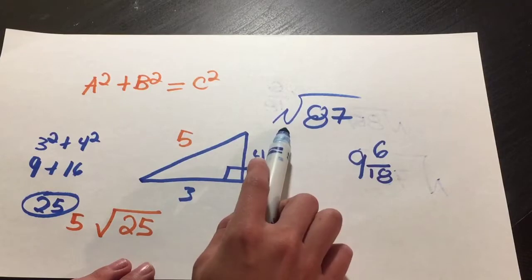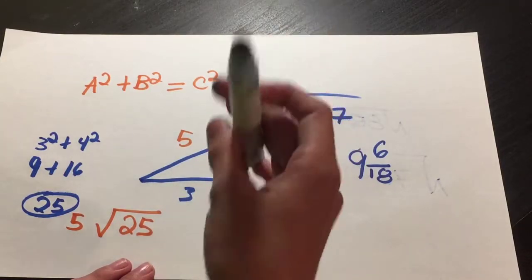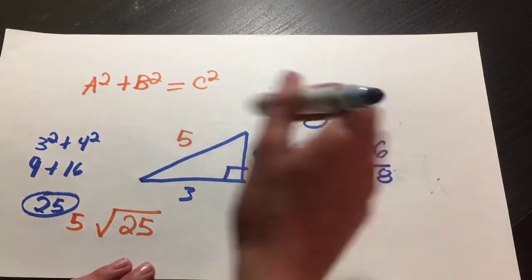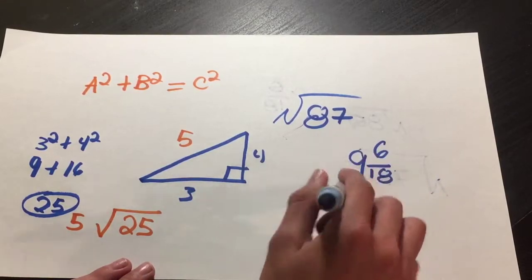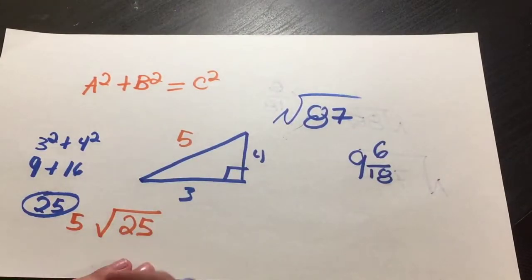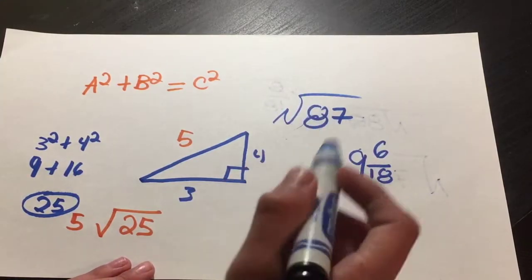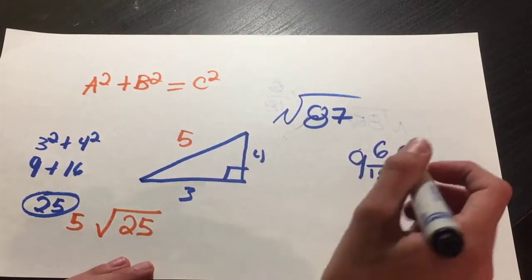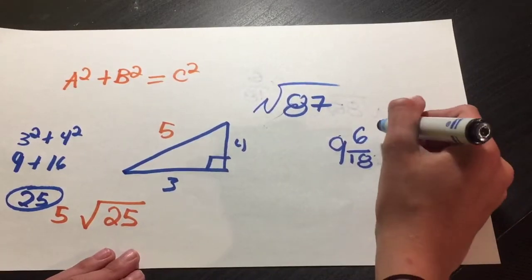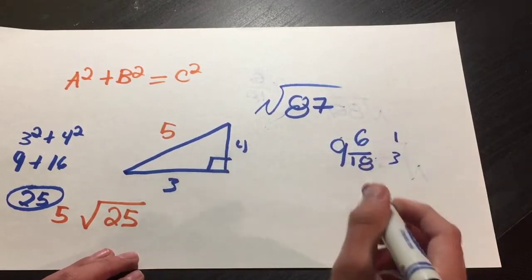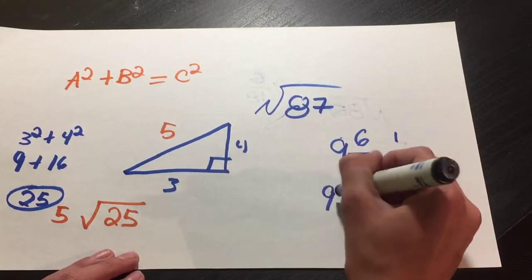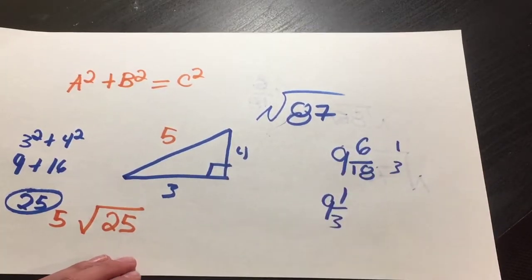So once again, find the nearest square root, which is 81. The difference between that nearest square and the original: 6. And then this large number doubled: 18. And what does 9 and 6 over 18 simplify to? Well, using a little bit of math, divided by 6, it's 1 and that's 3. So we're going to have about 9 and a third.